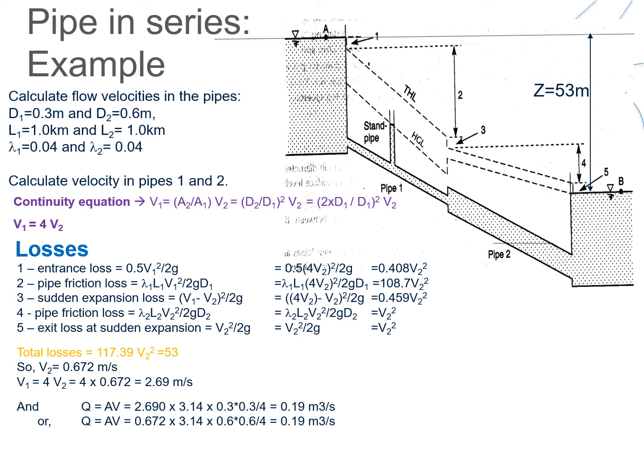Let's look at a few pipe flow problems. In this example, there are two reservoirs connected by two pipes — pipe 1 and pipe 2. We want to calculate the velocities of the flow in these two different pipes: what is velocity 1 and what is velocity 2?